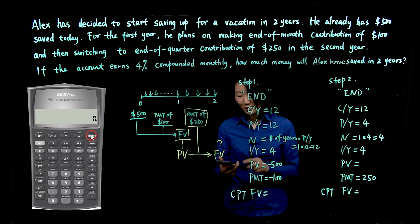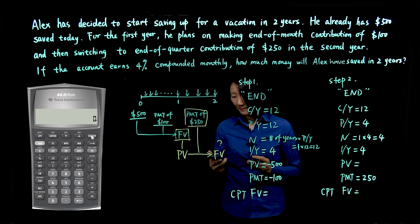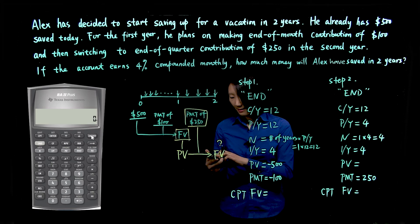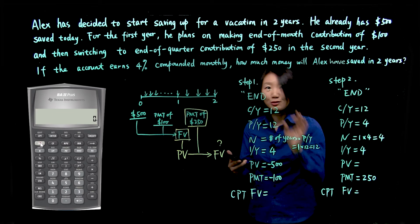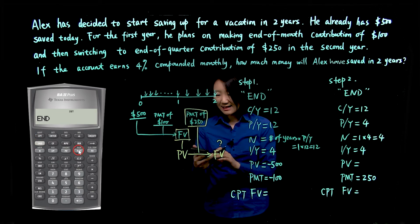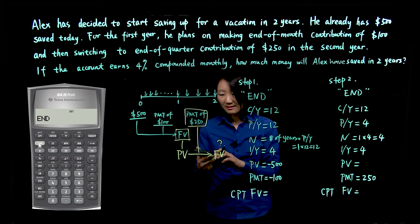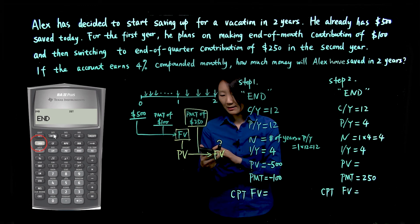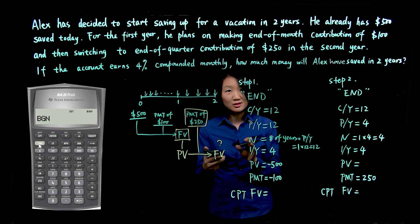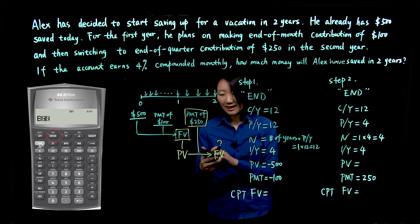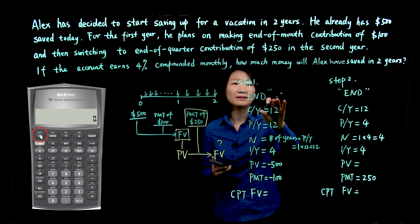First, turn on the calculator by pushing on and off button. Let's make sure the calculator is in the right mode, which is end. If yours is not, you can go to second BGN to change it. You just push second, enter. And once you're done, you do second and quit.